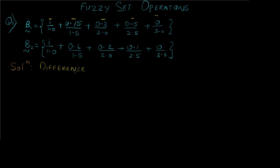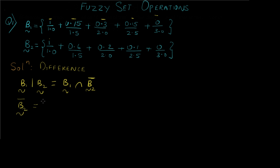For the last operation — difference — the formula is: B1 minus B2 equals B1 intersection B2 complement. We already know how to calculate intersection, so we take the minimum, but in this case between B1 and the complement of B2. This is a two-step problem: first, calculate the complement of B2 by subtracting each numerator from 1. Then take the intersection of B2 complement with B1 by comparing each numerator pair and taking the minimum.